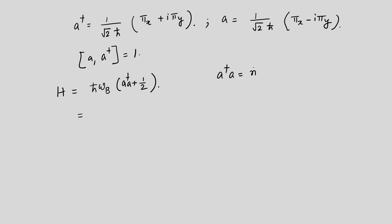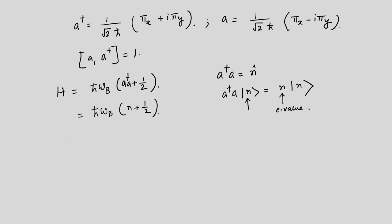The number operator a†a acting on |n⟩ gives n|n⟩, so the energy eigenvalues are En = ℏωb(n + 1/2), the same result seen earlier. Here ωb = eB/m is the cyclotron frequency. Even though new operators and commutation relations have been introduced, something very important will come up in this context that will be crucial when we discuss the fractional quantum Hall effect.